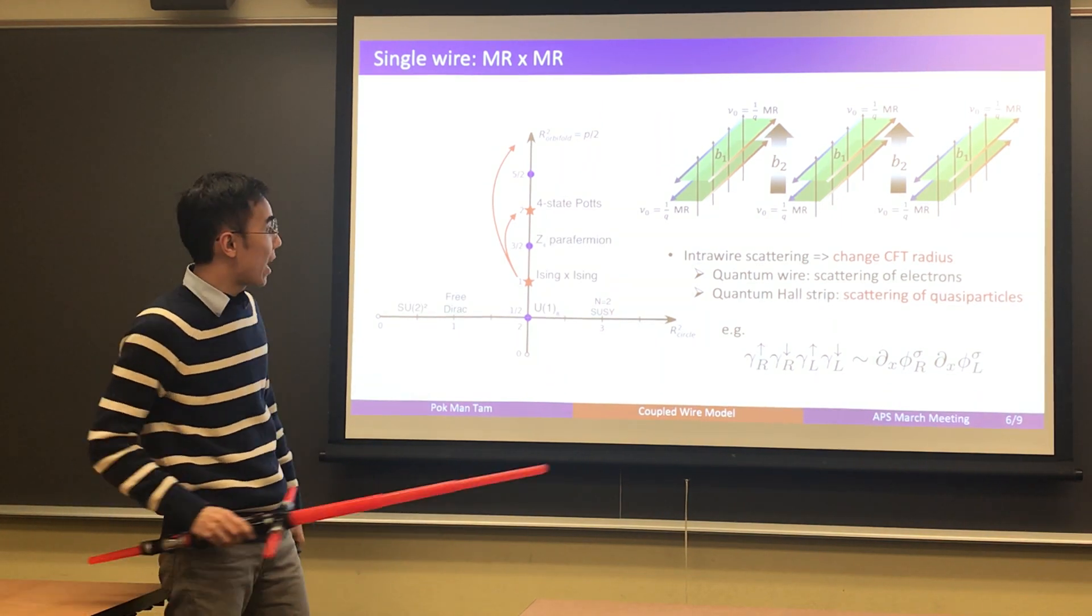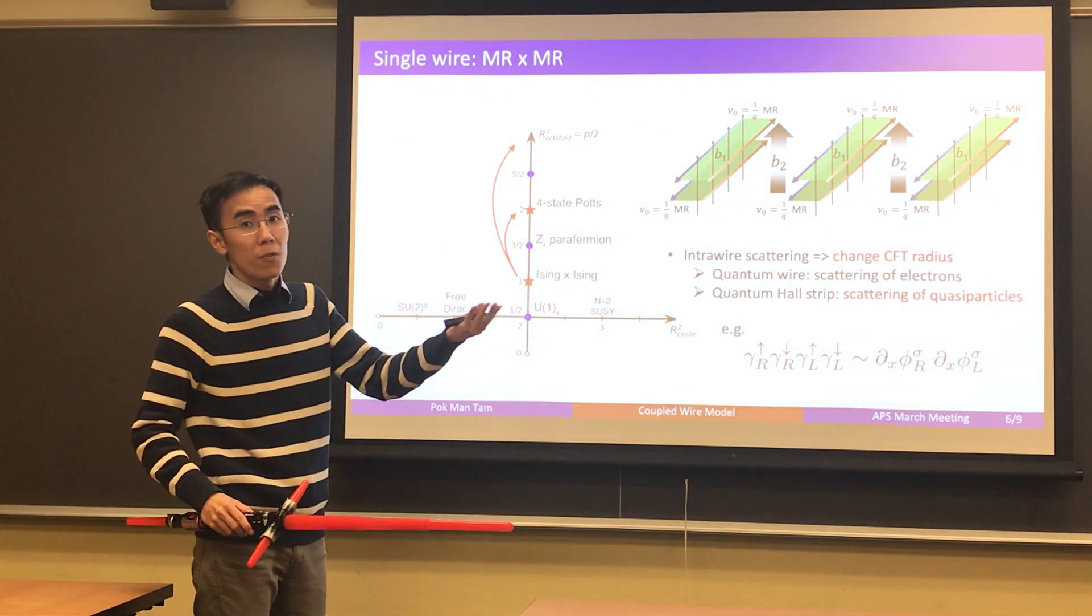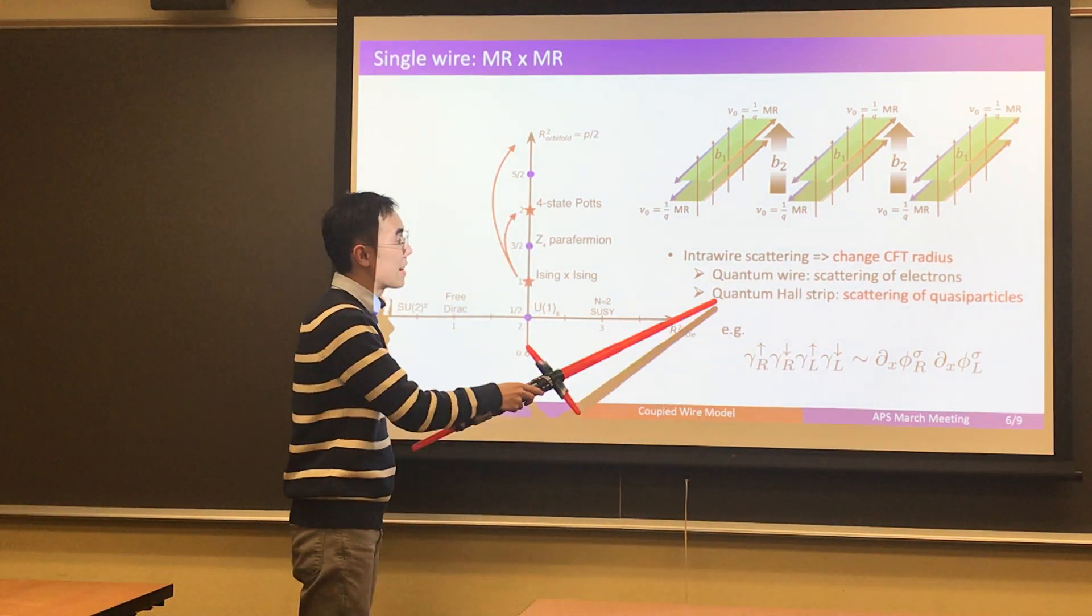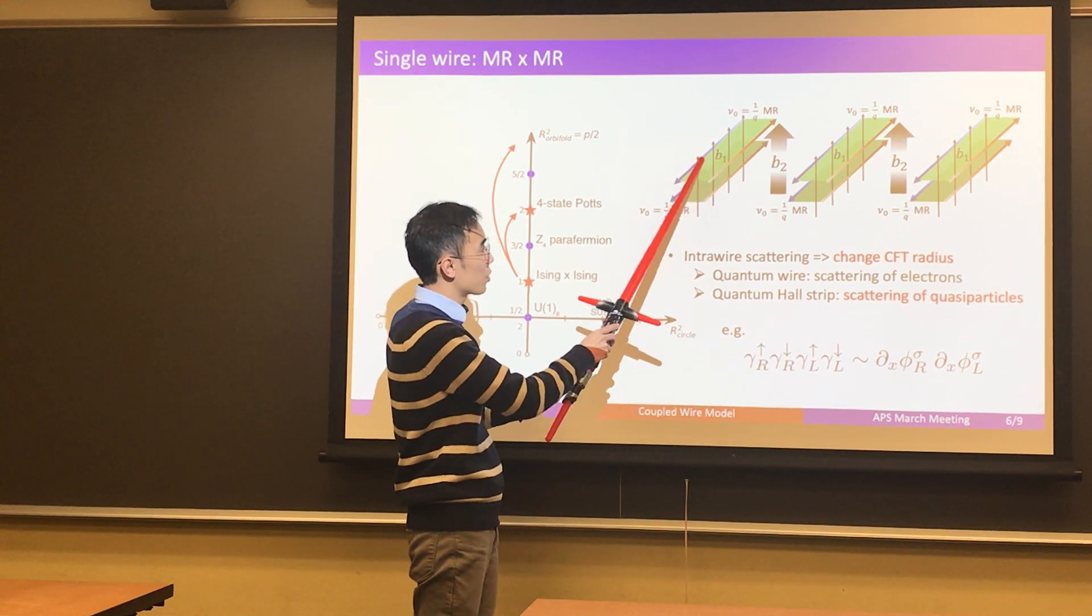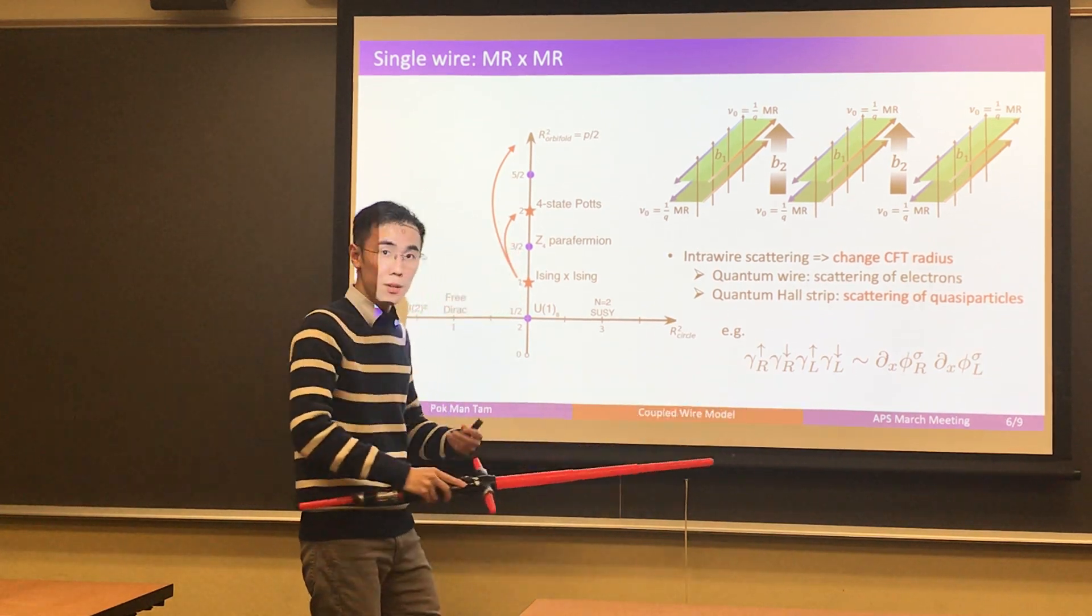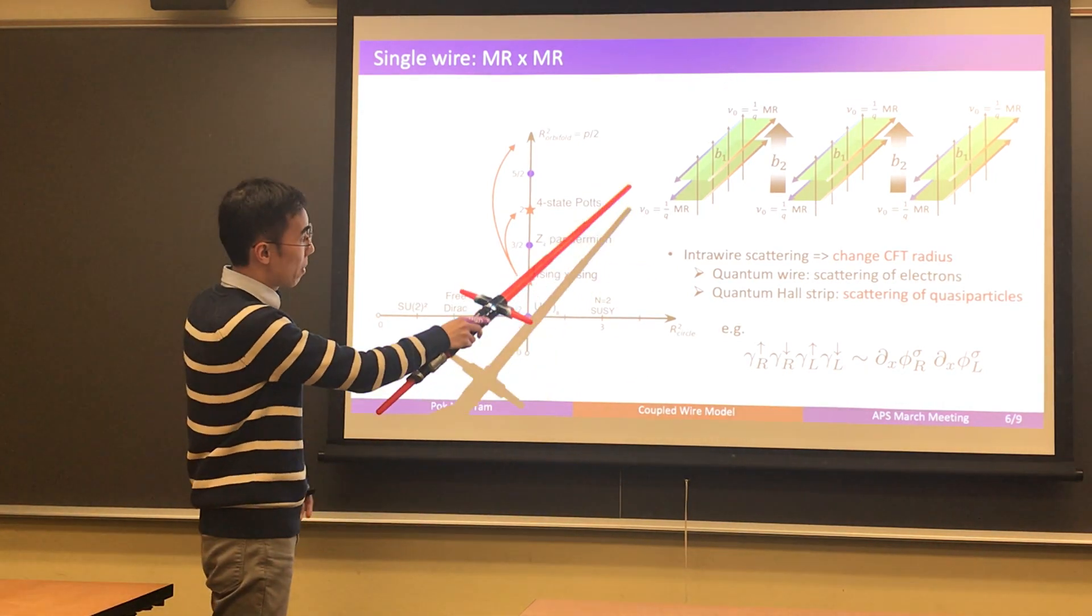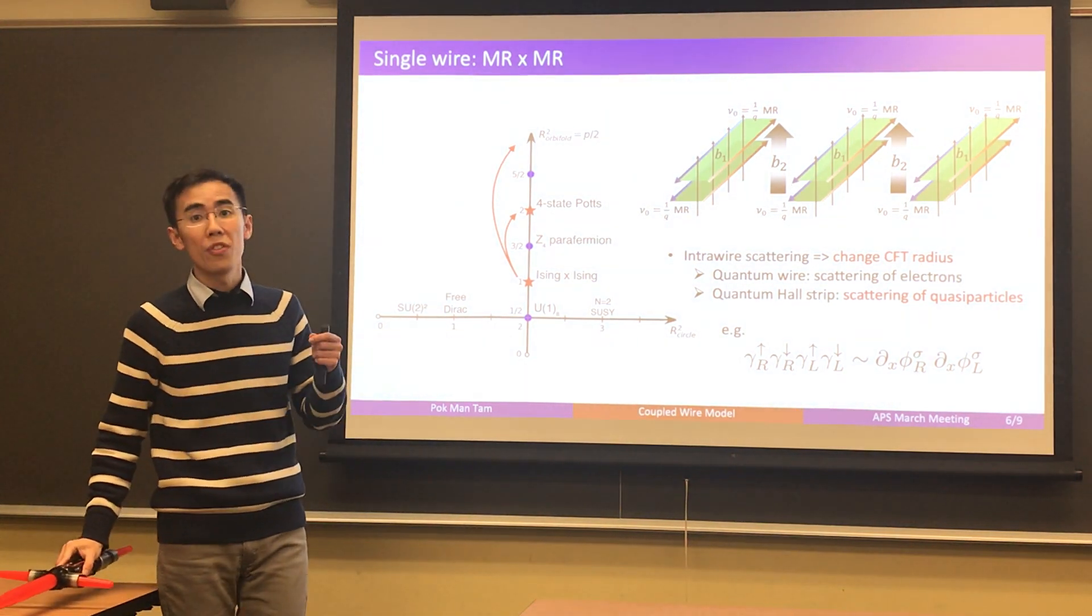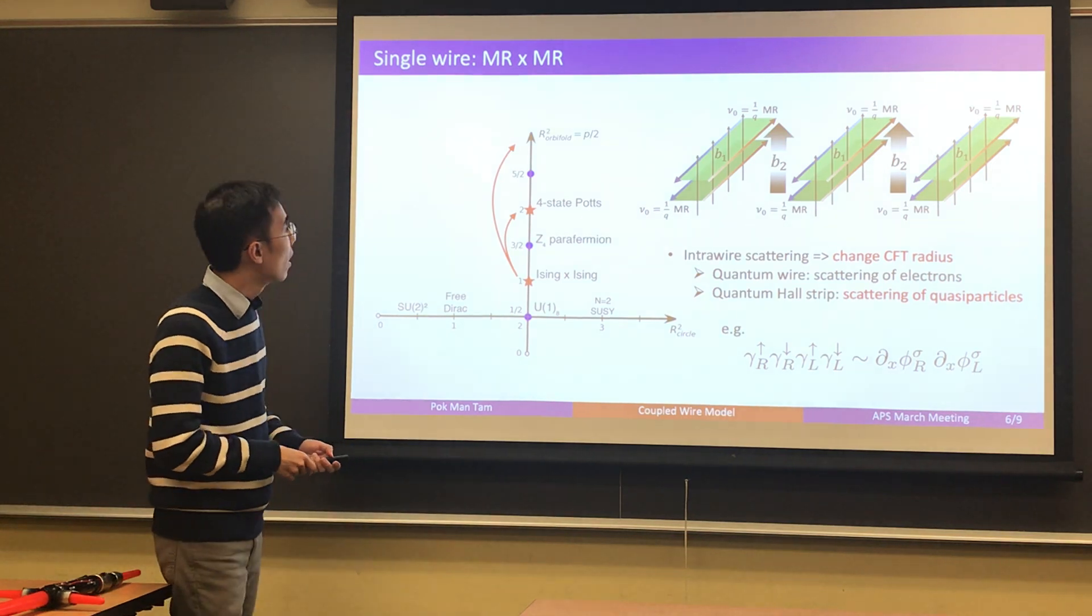So, if you have a bilayer Moore-Read quantum Hall states, the neutral sector is automatically two decoupled copies of Isings. And that is the p equals to 2, R equals to 1 point of the orbifold CFT. And we also figured out that we can turn on some intrawire scattering, which, when we want to construct Laughlin states, it corresponds to some forward scattering of electrons. And in this case, in our case here, it corresponds to some scattering of quasiparticles within the quantum Hall layers. In particular, if you turn on this scattering of Majorana, neutral Majorana quasiparticles, in the Moore-Read states, both at the top and bottom layers, we show that we can actually tune the radius of the orbifold CFT within each wire. So, that is the first ingredient that we want.